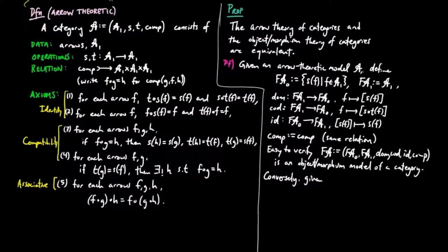Conversely, given an object morphism theoretic model of a category c, define arrows gc1 to be the morphisms of c, and the source operation to take an arrow f